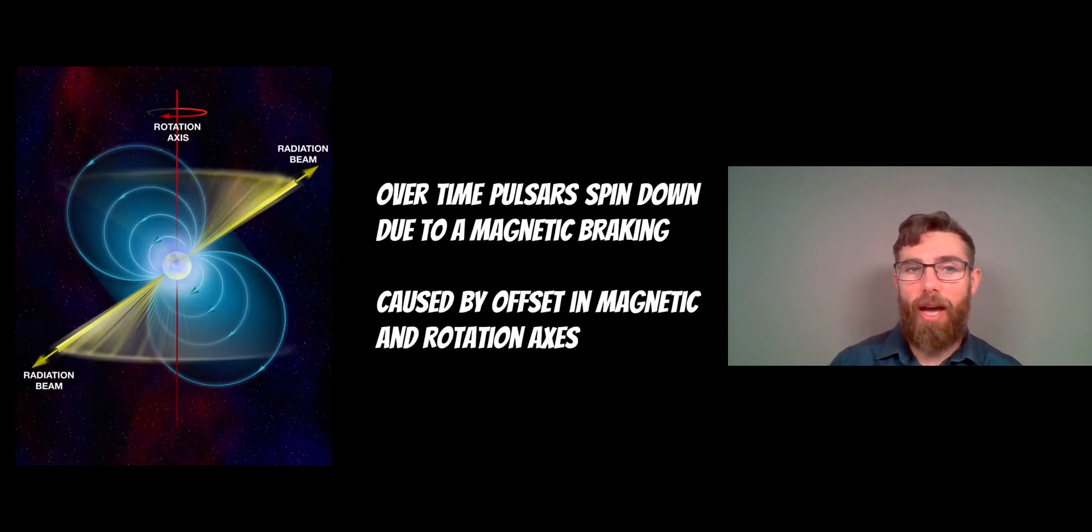They do slow down over time. The general configuration of a pulsar is that they have these energetic beams that are offset from their rotation axis. The beams are not at their rotation poles, and as they rotate they sweep a beam out, it's a bit like a lighthouse.